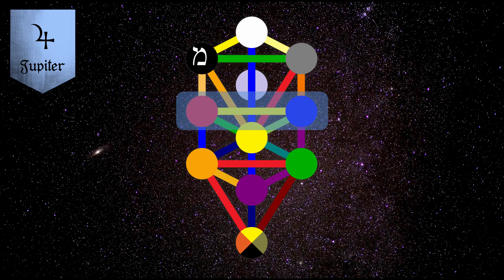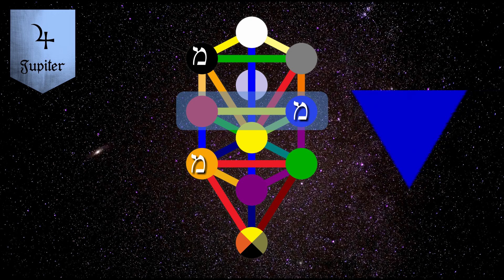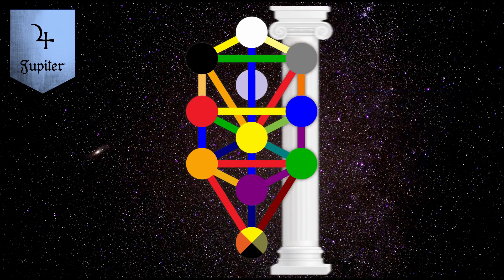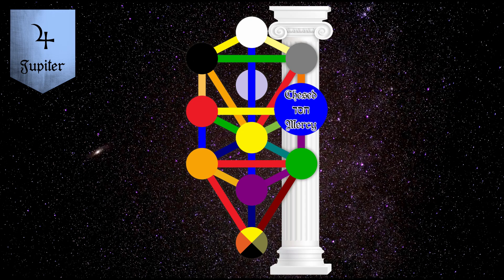Furthermore, the sephirah chesed is part of the pathway of the Hebrew letter Mem on the Kabbalistic Tree of Life. This pathway includes the sephirah Binah, Chesed, and Hod. Mem, amongst other things, symbolizes the water element and through this the form-giving aspect.